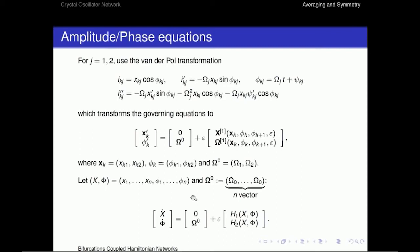Now, we're going to write the whole system as just one big system here, down here, with X and capital X and capital C. And we're going to add this omega 0 vector, which is just all these omega 0 frequencies, which are given by omega 1 and omega 2. And we rewrite it as follows down here. And now we have these two functions, H1 and H2.